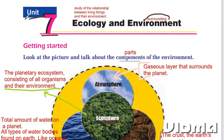Class 9, Unit 7: Ecology and Environment. Ecology means the study of the relationship between living things and their environment. And environment means surroundings.